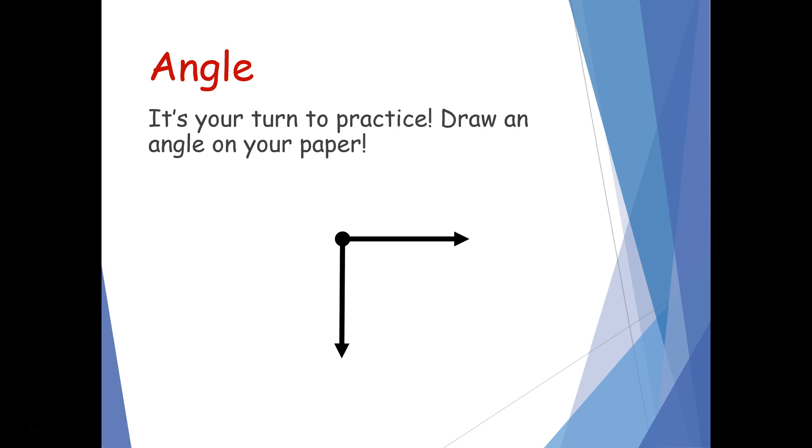When you're done you should have one vertex or point and then you should have two arrows coming from that point in two different directions. Remember it doesn't matter the direction of the lines or the arrows that you're drawing as long as they share that same vertex.